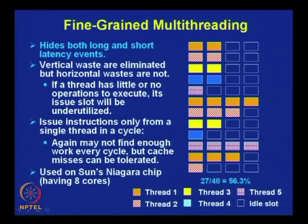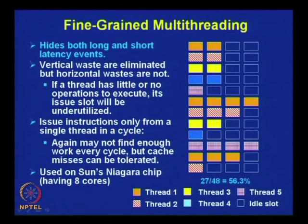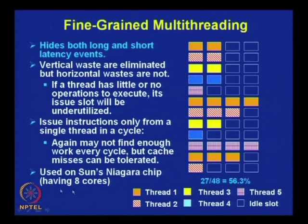Issuing instructions only from a single thread in a cycle may not find enough work every cycle, but cache misses can be tolerated. This particular approach has been used in Sun's Niagara chip, which has 8 cores in a single processor.